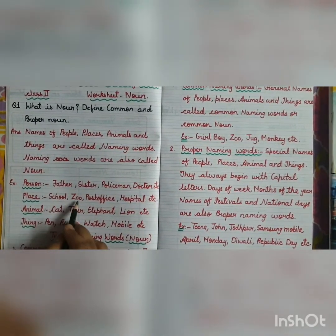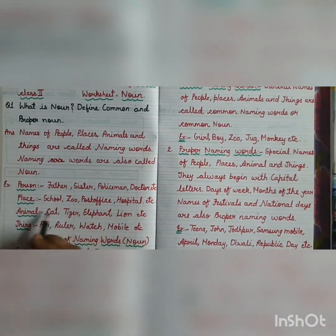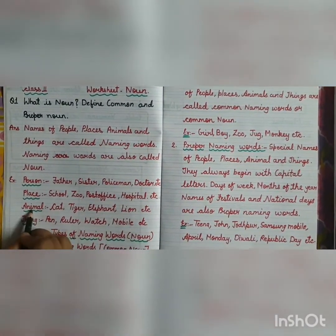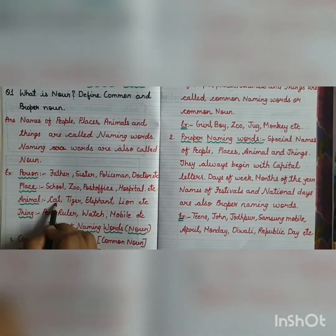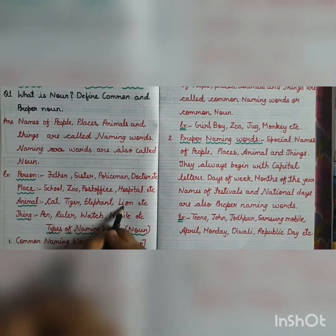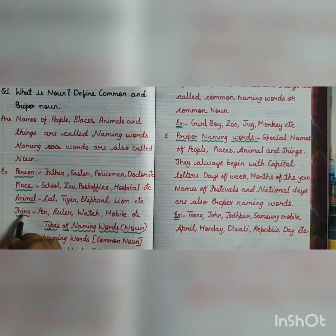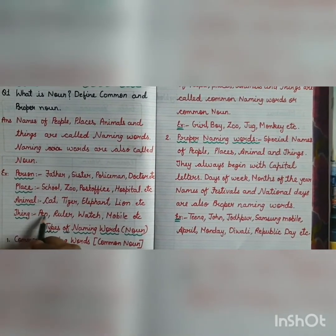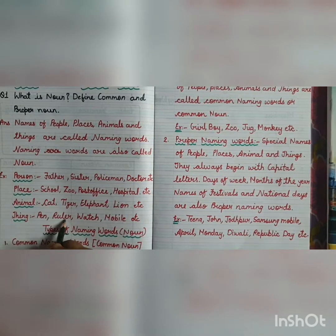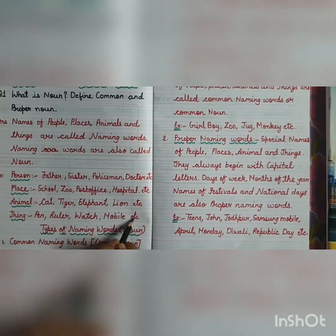Example of place: school, zoo, post office, hospital, etc. Example of animals: cat, tiger, elephant, lion, etc. Example for thing: pan, ruler, watch, mobile, etc.